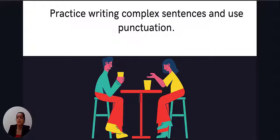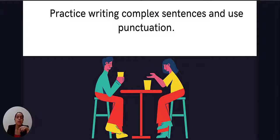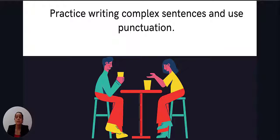Practice writing complex sentences and use punctuation. Your writing should be a mixture of complex sentences, compound sentences, and simple sentences. If you're just using simple sentences, you're not going to be given a score higher than 6. Complex sentences don't mean really complex — you just need to use a wide variety of subordinating conjunctions like 'although', 'however', 'while', 'whereas', and your sentence is categorized as complex. Or relative clauses using 'which', 'who', 'whom' — these make your sentences complex.